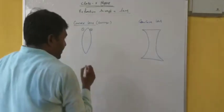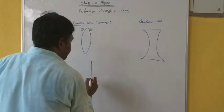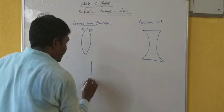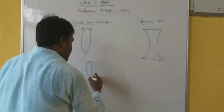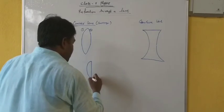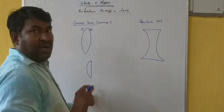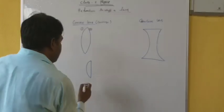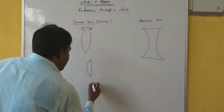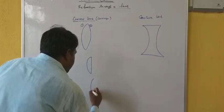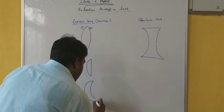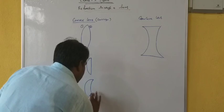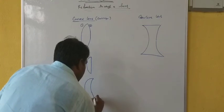Planoconvex: if one surface is plane and the other surface is convex. And concavoconvex: if one surface is concave and the other is convex.